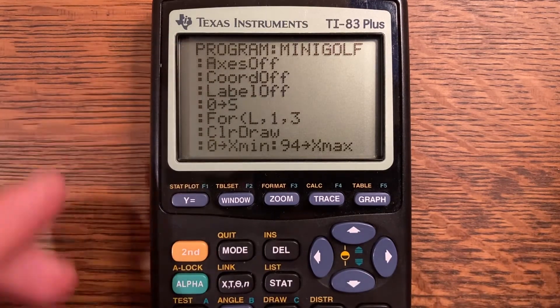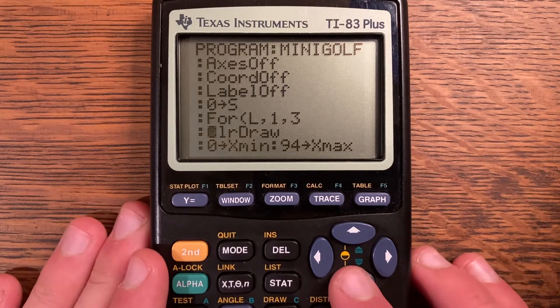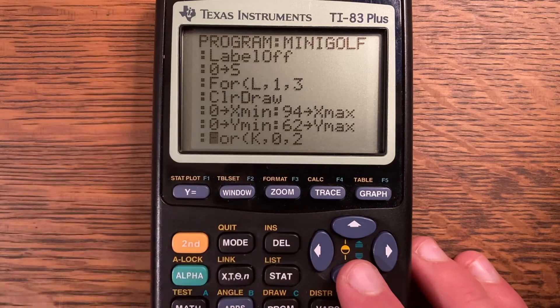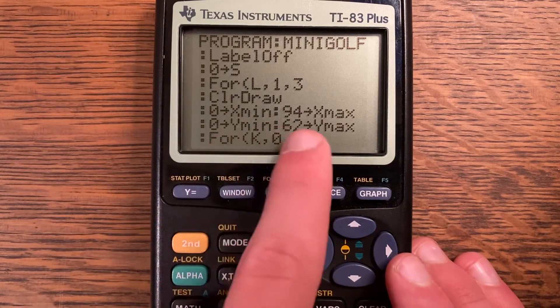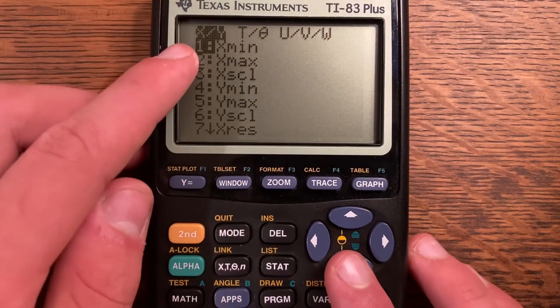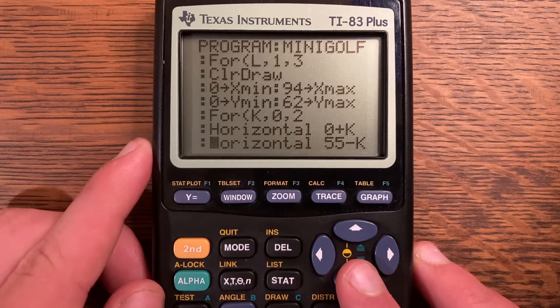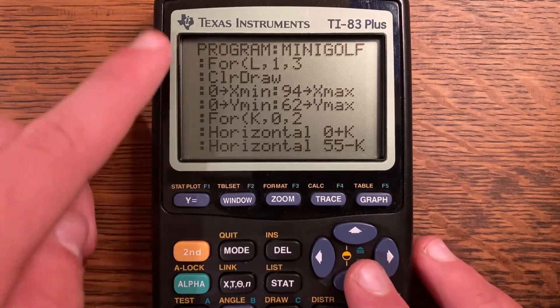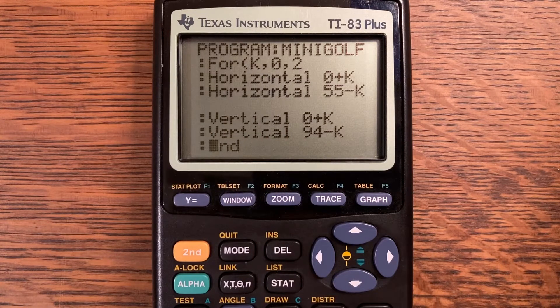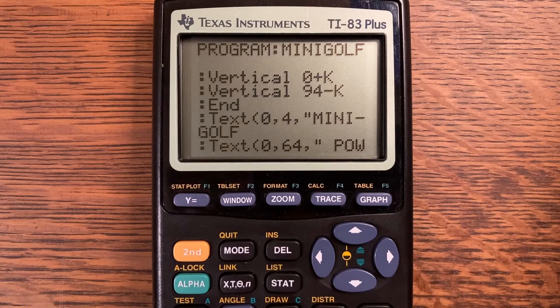The easiest way to find them is second and zoom and you can see right here there's axes off. So if you go over there and click enter, it will give you axes off and all the other ones are there. Zero store into S. For L comma 1 comma 3, clear draw. Zero store into X-min, 94 store into X-max, zero store into Y-min, 62 store into Y-max. X-min and X-max, Y-min, Y-max, they can be found in VARS window VARS. Then for K comma 0 comma 2, horizontal 0 plus K, horizontal 55 minus K. That's going to be forming our border.